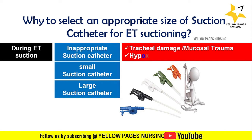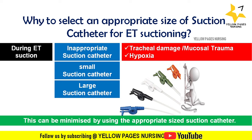If the catheter is too small, it will not be adequate to remove secretions, so repeated attempts will be necessary, which have also been shown to damage the trachea. If a large catheter is used, it will occlude the tracheal tube and may cause hypoxia. This can be minimized by using the appropriately sized suction catheter.